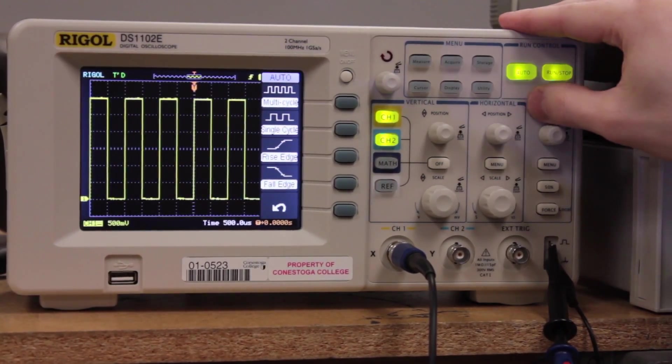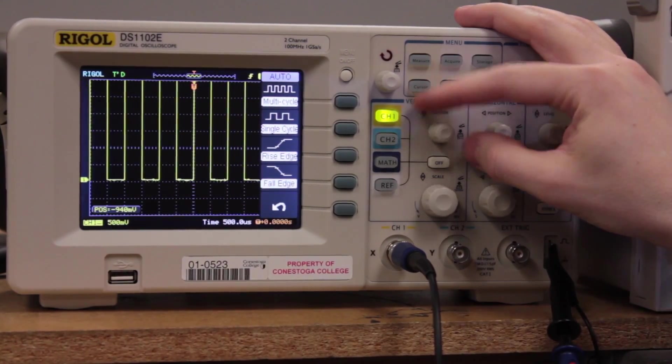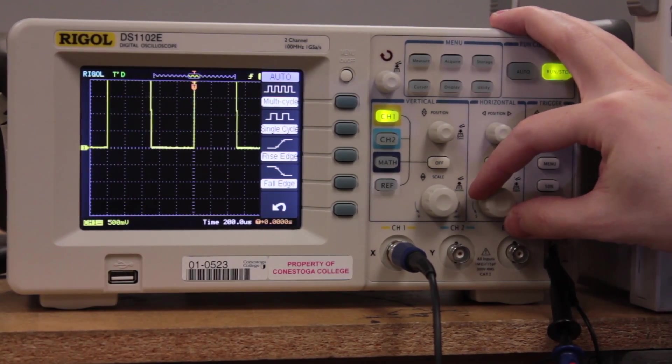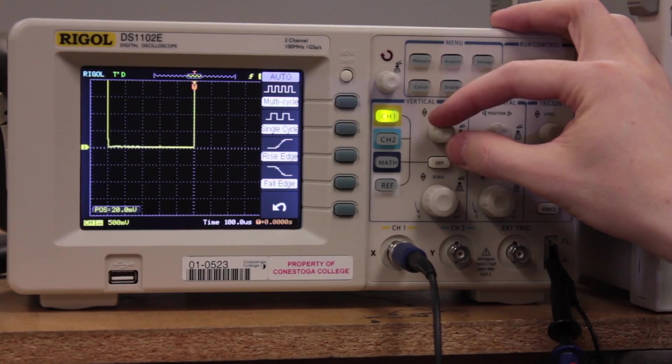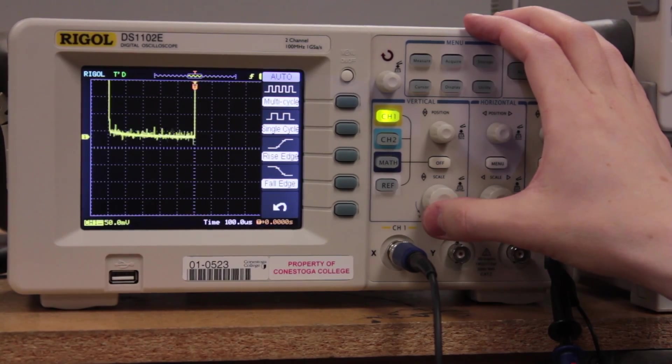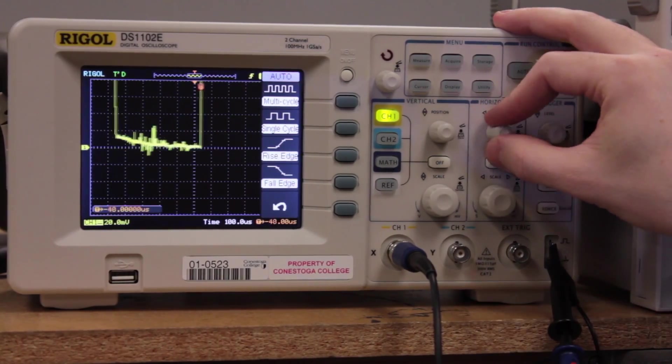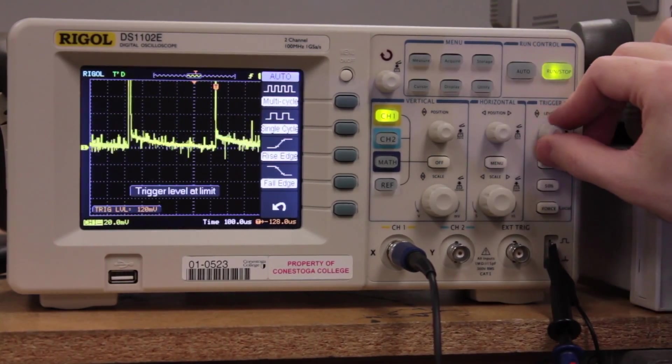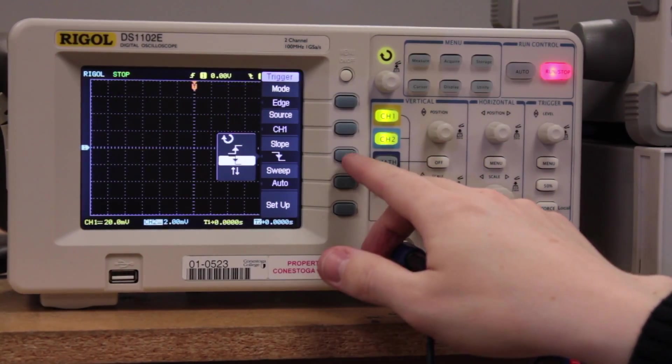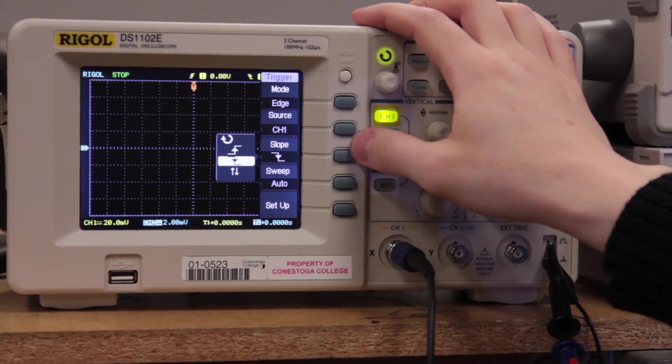Alright, so you hit auto, that will acquire the waveform here. Then you're going to move this up so that you can just see the bottom of the waveform like so. Alright, and then what you're going to do is you're going to zoom in as tight as you can get on it like this. I'm just going to move that there. So it should be on edge channel 1. The slope can be either rising or falling and sweep should be set to auto.